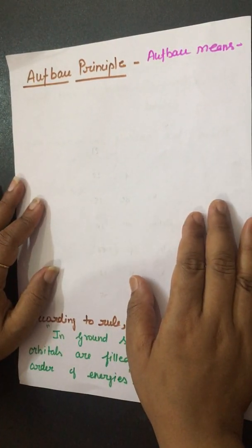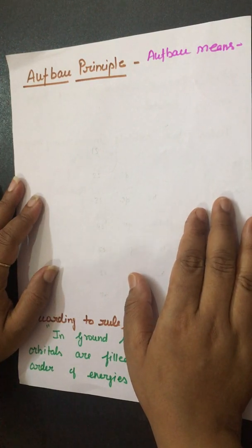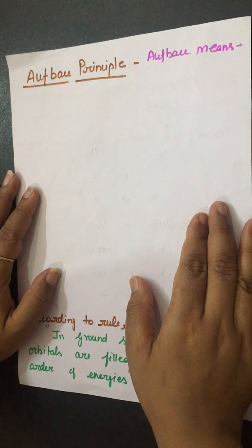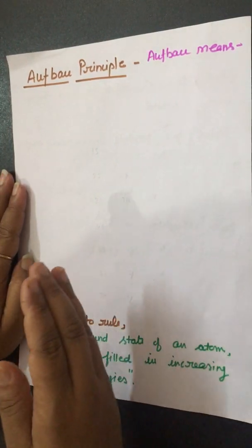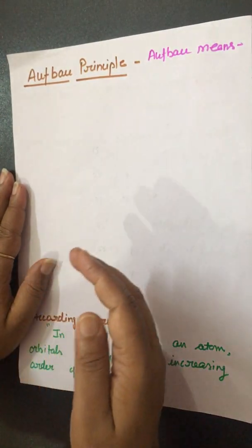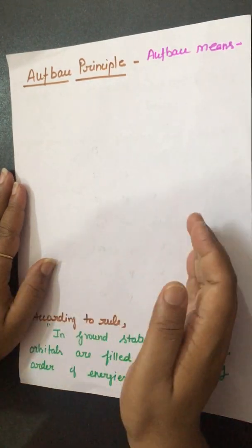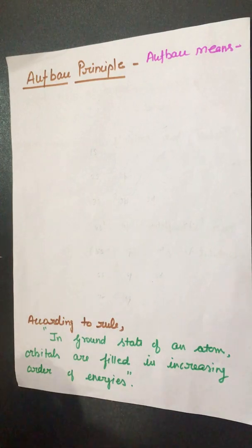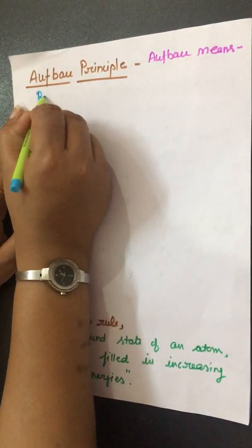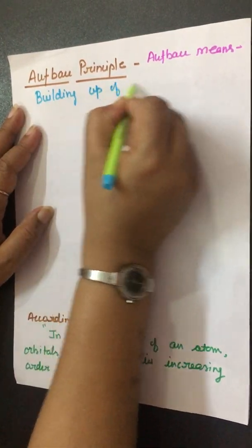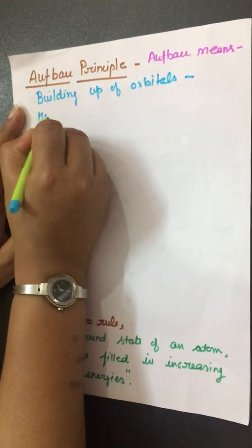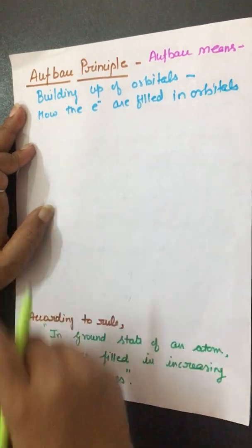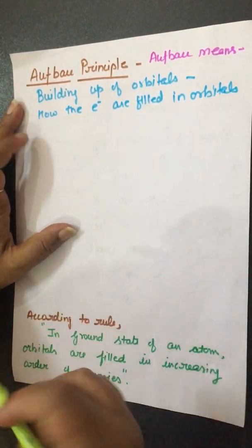In this video we will discuss the Aufbau rule or Aufbau principle of atomic structure. The Aufbau rule gives information about how the electrons are filled in orbitals. It states that in the ground state, firstly the lower energy orbital will be filled, and then the next higher energy orbital, and so on. Aufbau means 'building up of orbitals' — it shows how electrons are filled in orbitals.